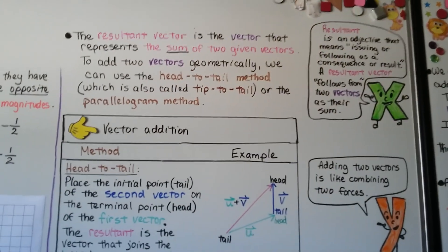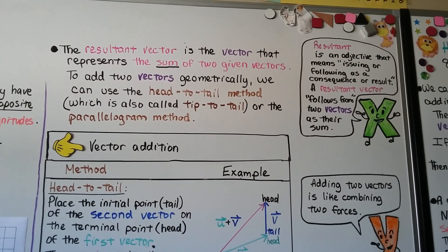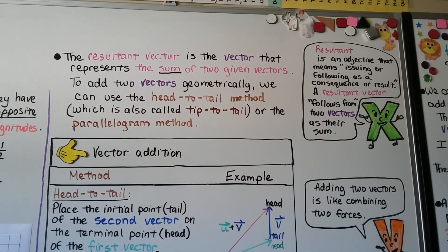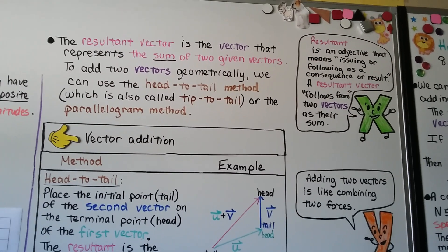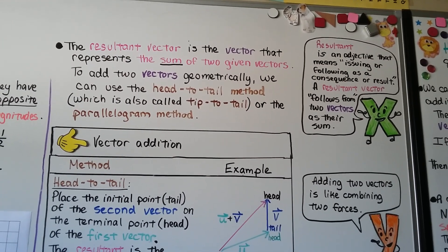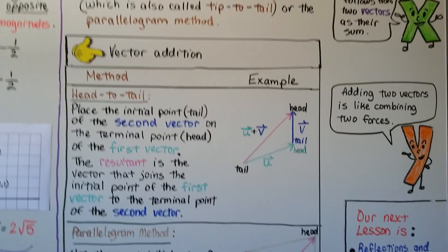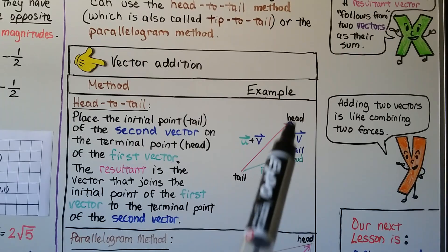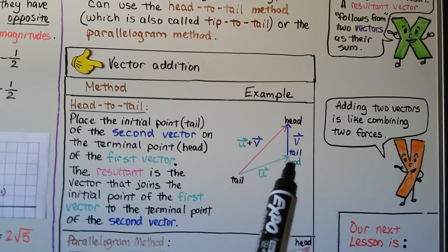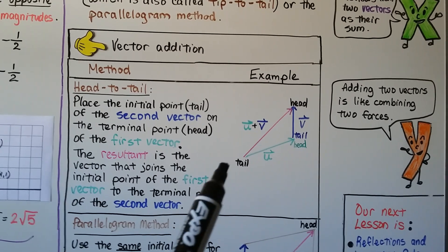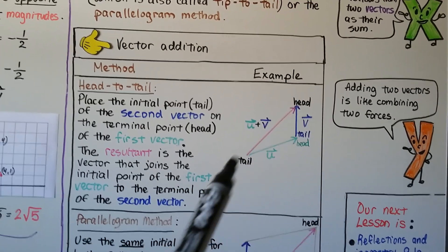The resultant vector is the vector that represents the sum of two given vectors. To add two vectors geometrically, we can use the head-to-tail method — sometimes called tip-to-tail — or the parallelogram method. Resultant means issuing or following as a consequence or result; a resultant vector follows from two vectors as their sum. In the head-to-tail method, we place the initial point (tail) of vector v on the terminal point (head) of vector u. The resultant is the vector that joins the initial point of the first to the terminal point of the second — vector u plus vector v is this resulting line.